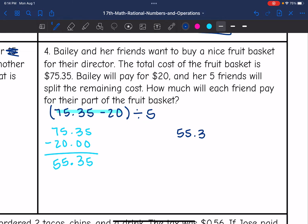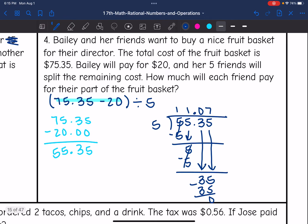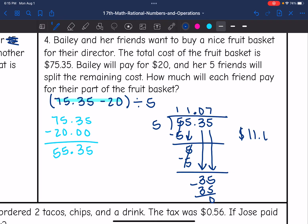Now we need to divide that by 5. So 5 goes into 5 one time. 1 times 5 is 5, we'll subtract, bring down the 5. 5 goes into 5 one time, subtract, bring down the 3. 5 doesn't go into 3, so let me bring down the next number. And 5 goes into 35 seven times. So 7 times 5 is 35, and we subtract and get 0. So each of her friends will pay $11.07.